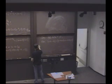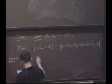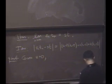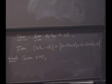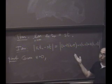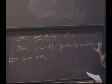Given epsilon bigger than 0. Well, okay, what am I going to do here? I'm going to try to use the triangle inequality here. I'll try to make this part small, this part small, and this part small.